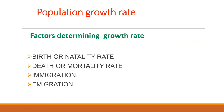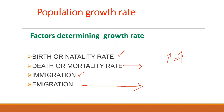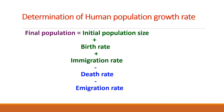Population growth is determined by the number of individuals added to the population by birth and immigration, and the number lost by death and emigration. If more individuals are added than lost, the population shows positive growth. If more are lost than added, the population shows negative growth. If the two rates are equal, the population becomes stationary, called zero growth. Therefore, population growth equals births plus immigration minus deaths plus emigration. The scientific study of human population is called demographics, and it deals with change in population, composition of population such as age distribution, age ratio, and sex ratio, and distribution of population in space.